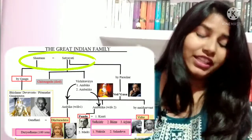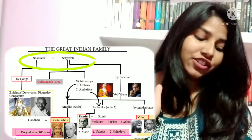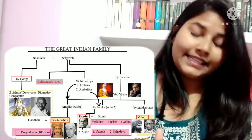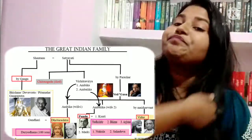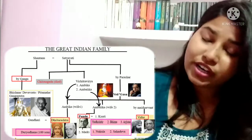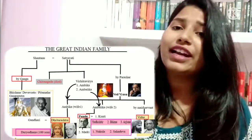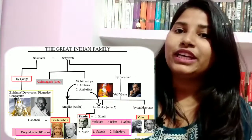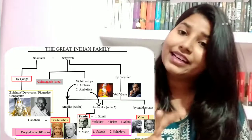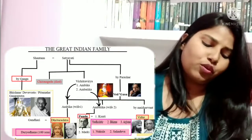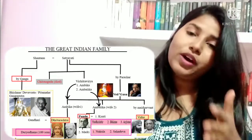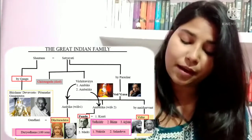It starts with Shantanu and Satyavati. Shantanu has a child called Gangadat with Ganga — Ganga Putra — whom we all know as Bhishma Pitama, and he is represented by Gandhiji. The parallel has been drawn between characters, not the whole story, so try to suspend your disbelief and just enjoy the story.